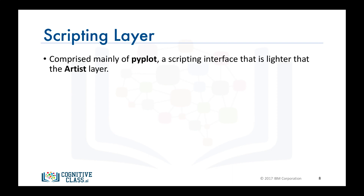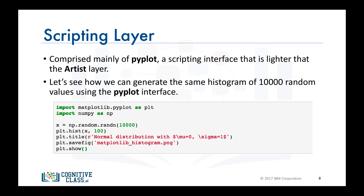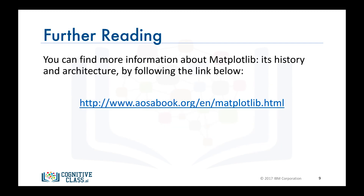Matplotlib's scripting layer is essentially the matplotlib.pyplot interface, which automates the process of defining a canvas and defining a figure artist instance and connecting them. Let's see how the same code used earlier with the artist layer to generate a histogram of 10,000 random numbers looks using pyplot. First, we import the pyplot interface, and you can see how all the methods associated with creating the histogram and other artist objects — whether it is the hist method or showing the figure — are part of the pyplot interface. If you're interested in learning more about the history of Matplotlib and its architecture, there is a chapter written by the creators of Matplotlib themselves that is definitely a recommended read.